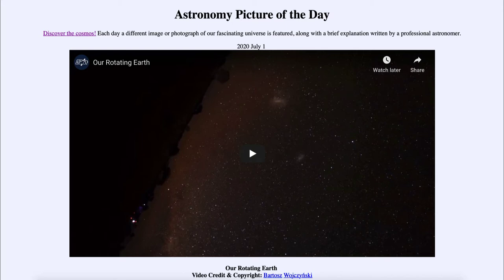That is apod.nasa.gov/apod. Today's picture for July 1st of 2020 is titled Our Rotating Earth. This is about a 45-second video that actually covers about two days worth of motion.